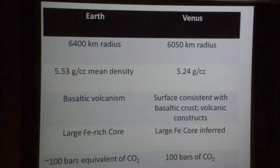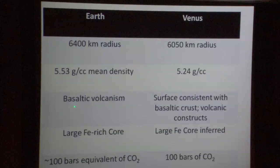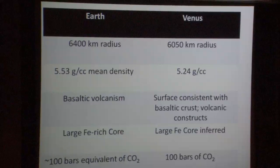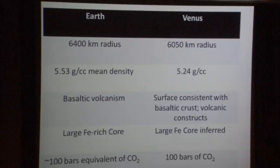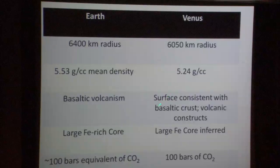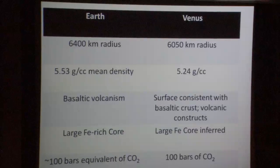Both planets show evidence for basaltic volcanism, though the style and details are very different. On Earth, basaltic volcanism comes predominantly from mid-ocean ridges, hotspot volcanism, and arc volcanism. In the case of Venus, much of the volcanism appears morphologically similar to hotspot volcanism. From the Venera missions — the only missions to reach the surface — compositional information indicates the surface is consistent with basalt, and we see volcanic constructs in the radar maps.